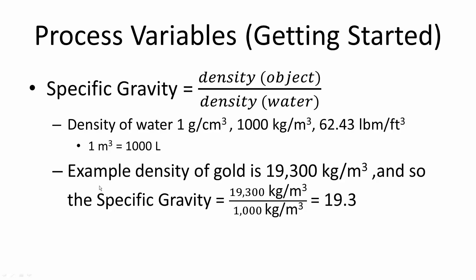Next, we want to go over an example problem. If we have gold, which has a density of 19,300 kilograms per meter cubed, and we know the density of water is 1,000 kilograms per meter cubed, if we divide the two, we get 19.3.